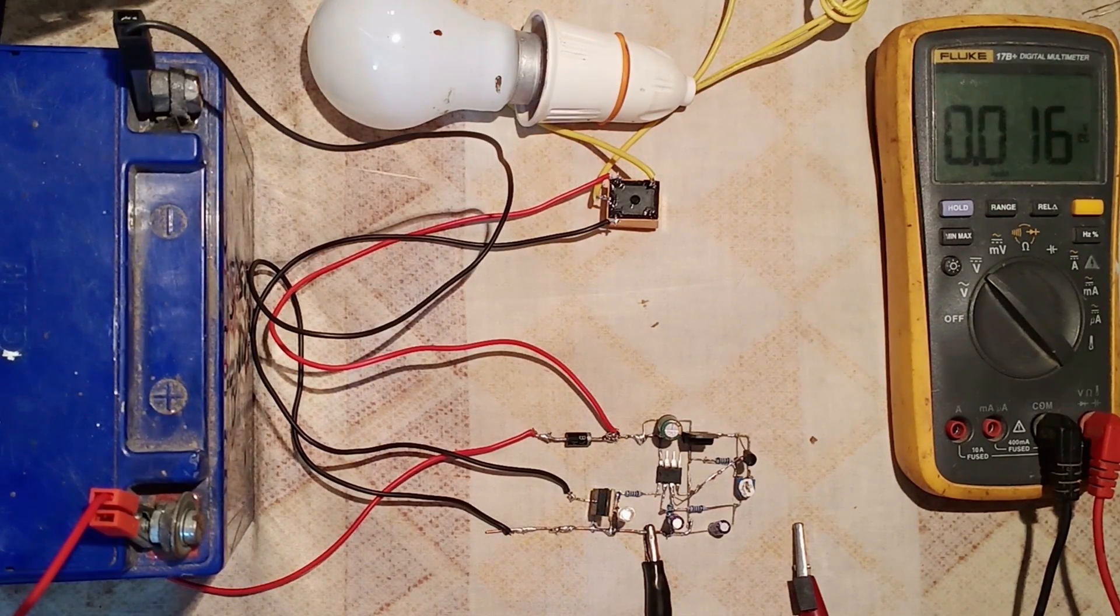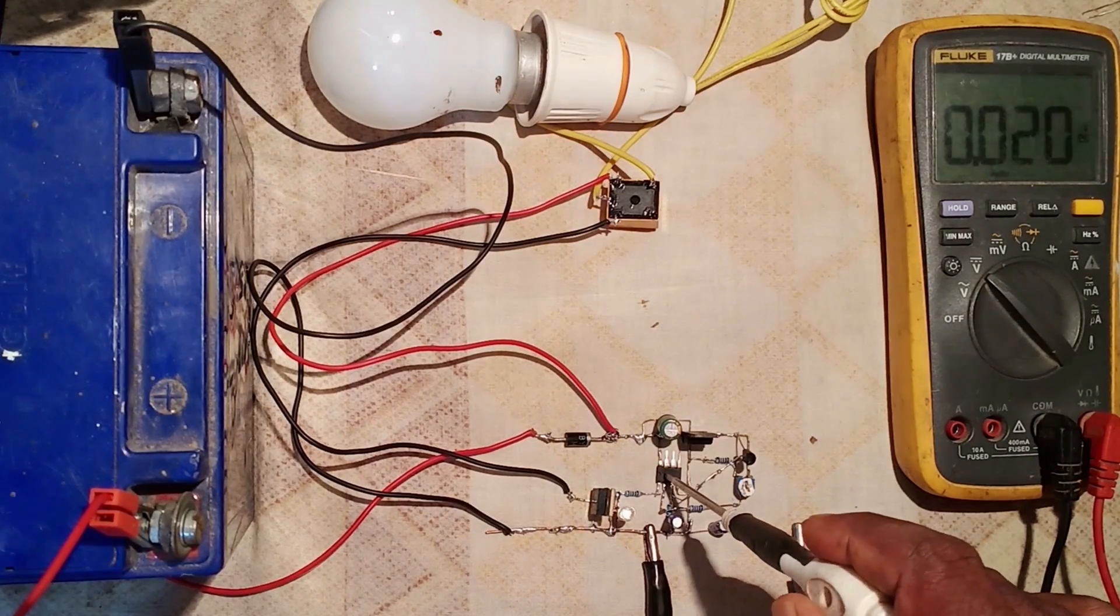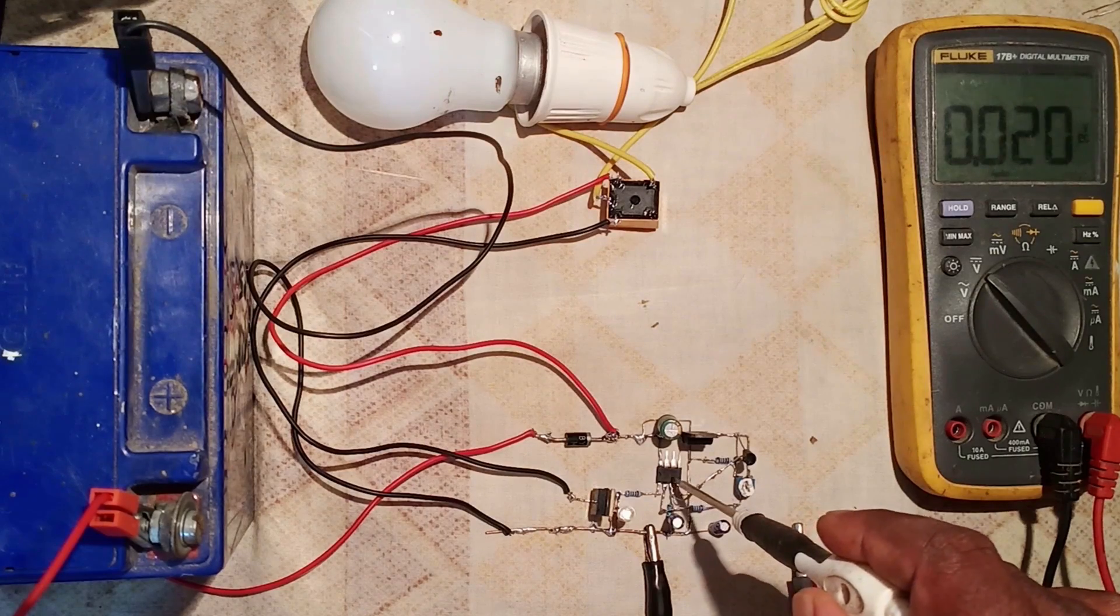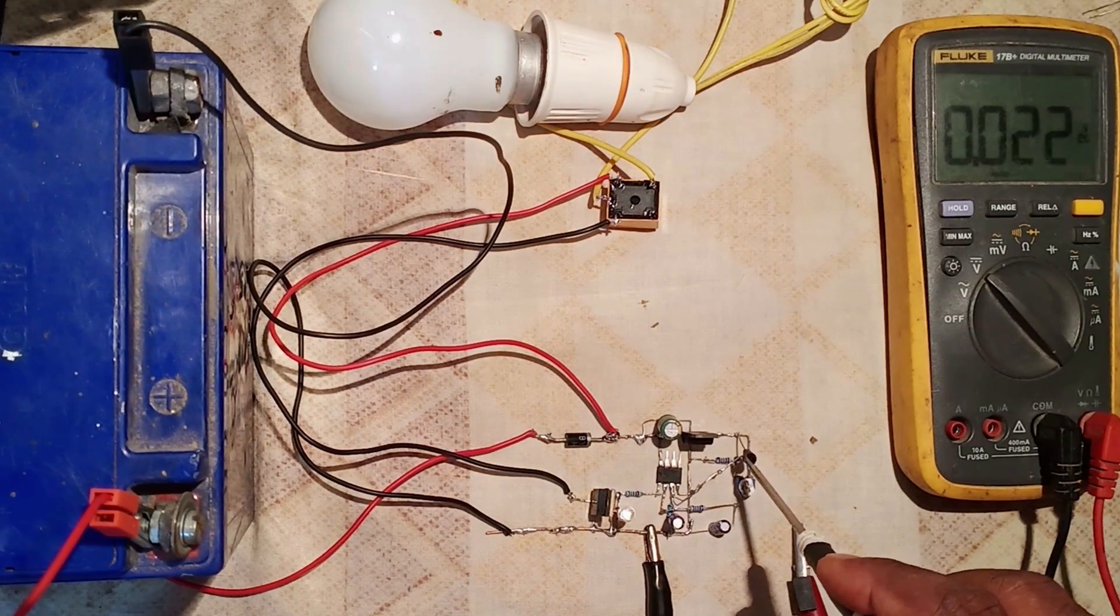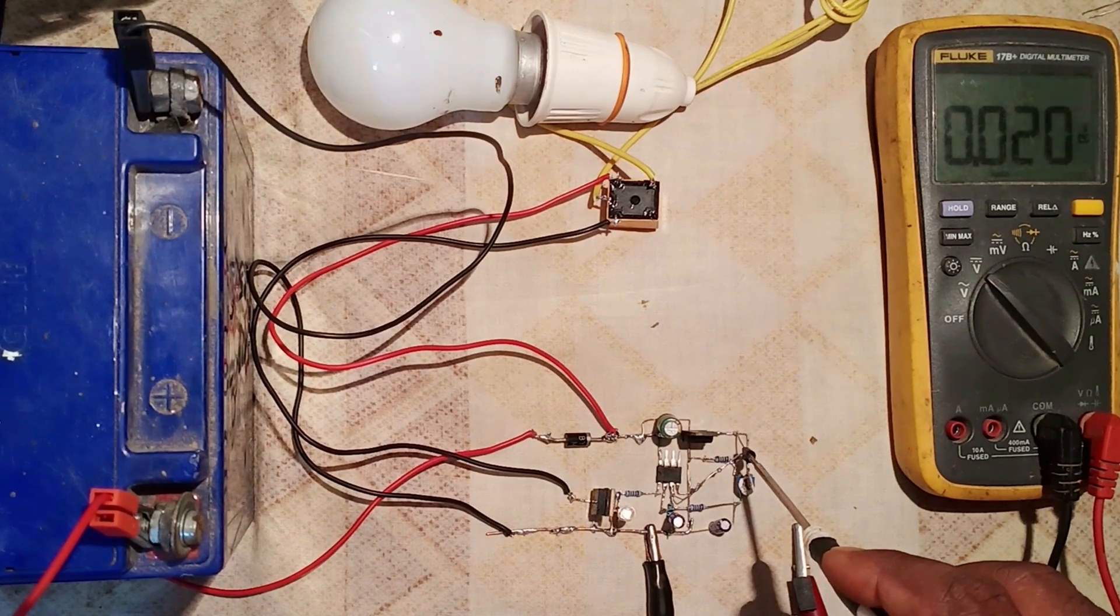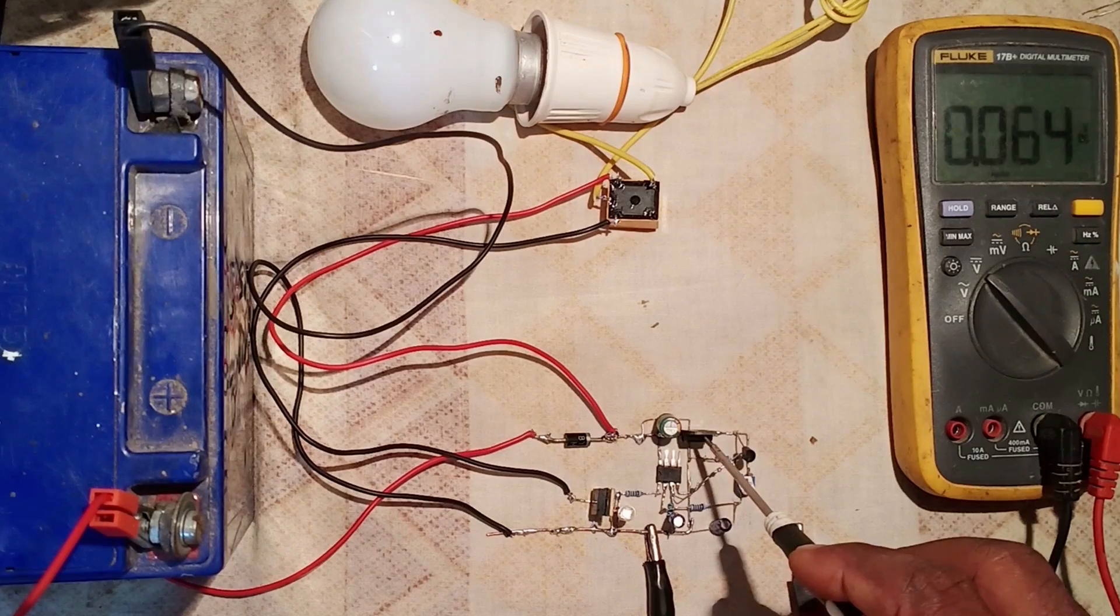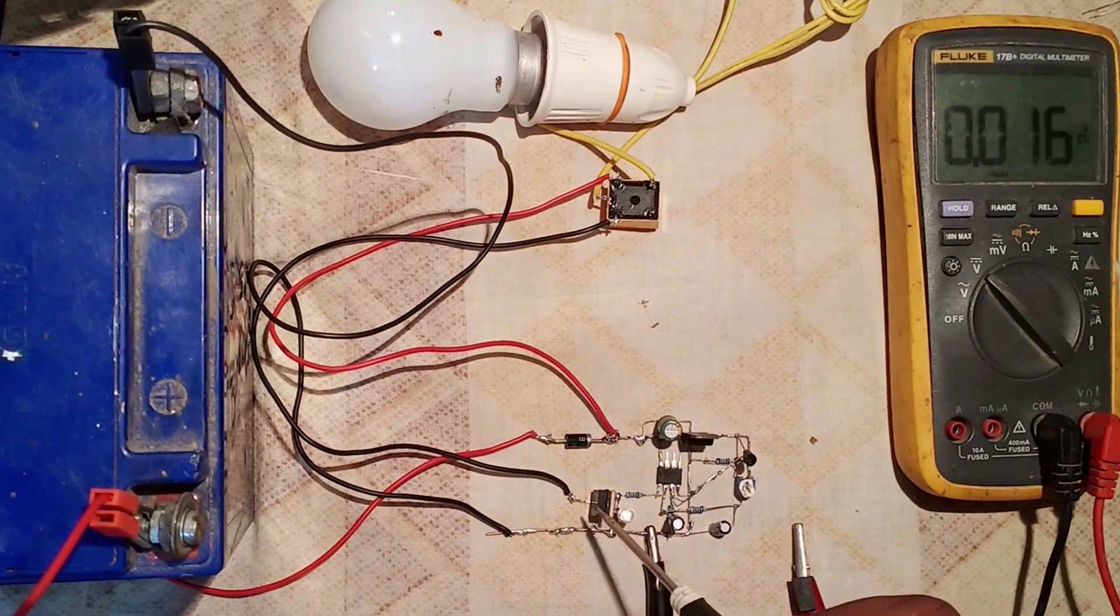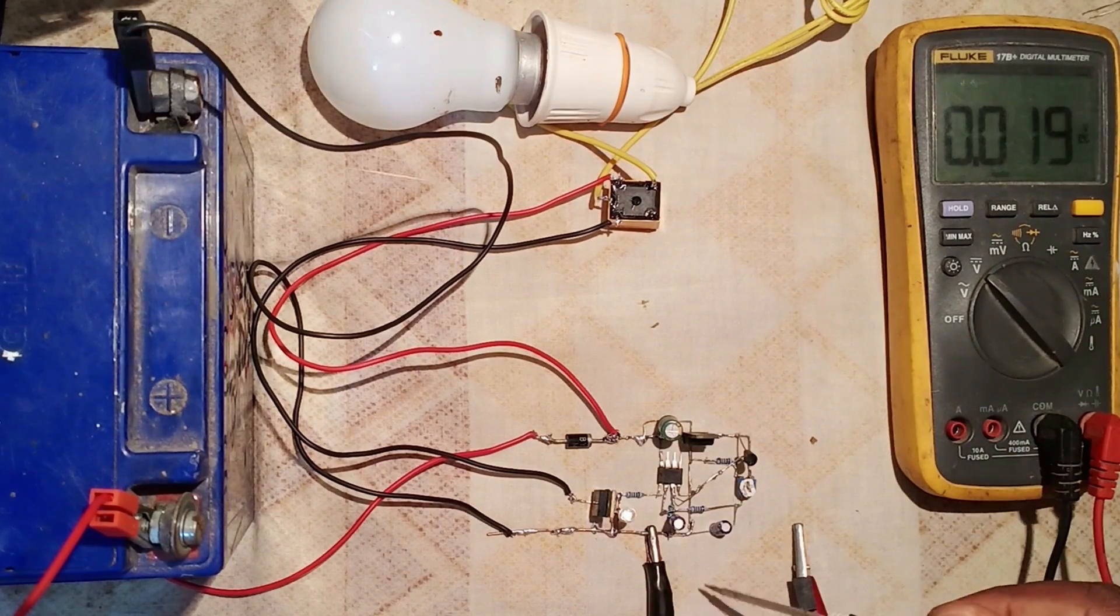The circuit is built around a very popular op-amp with part number LM358, a precision centigrade temperature sensor LM35, a fixed 5-volt voltage regulator, a MOSFET, a single changeover relay, and a few common components.